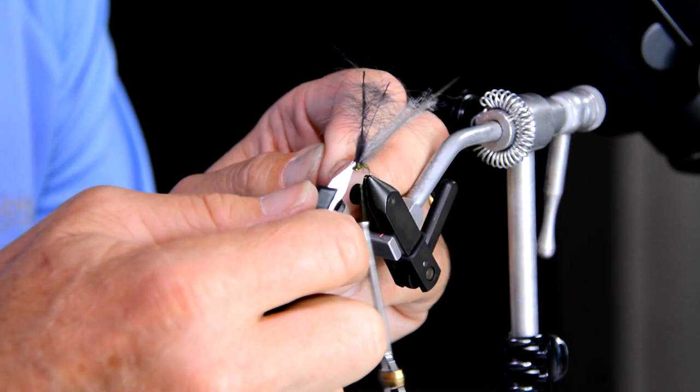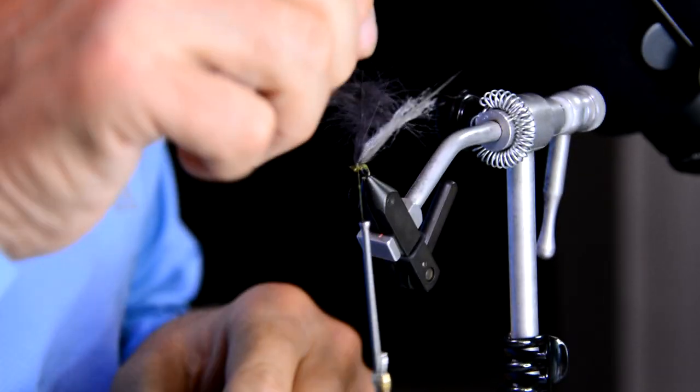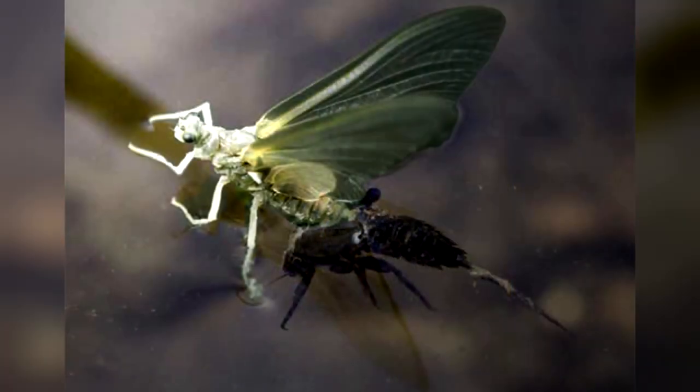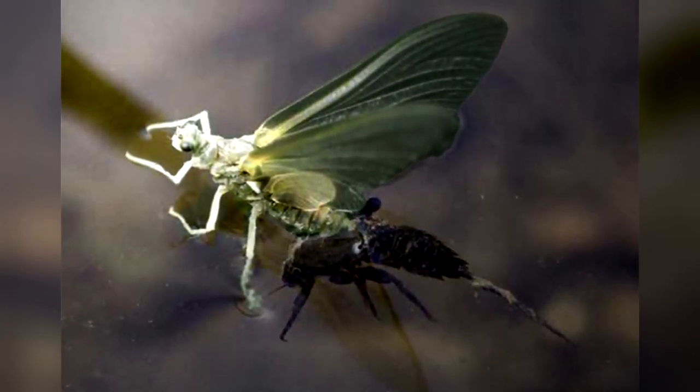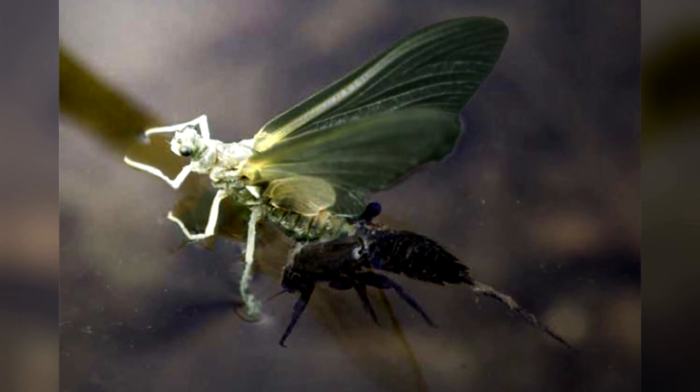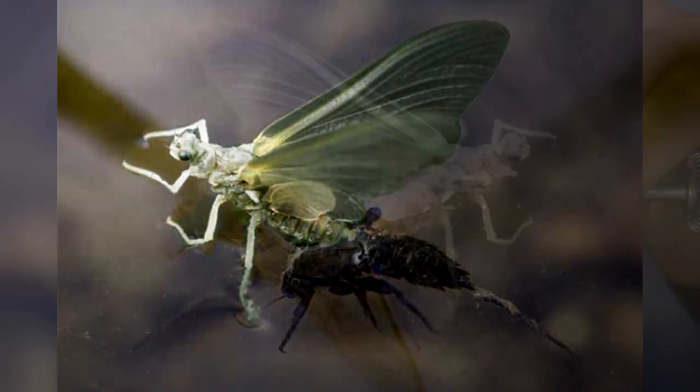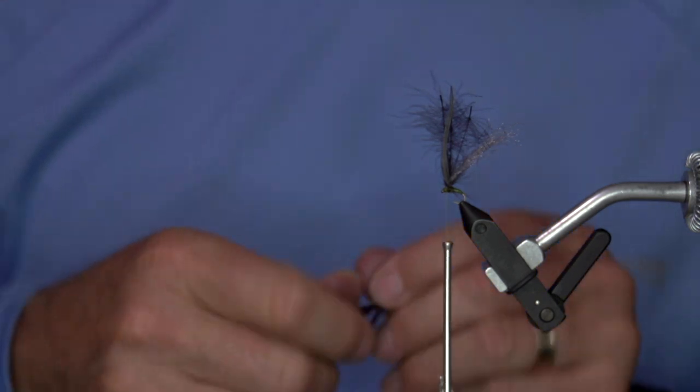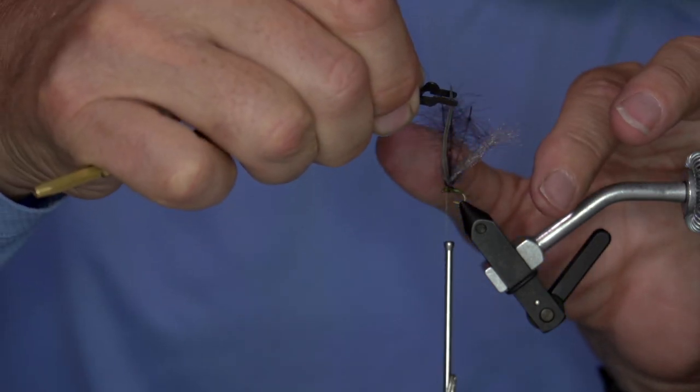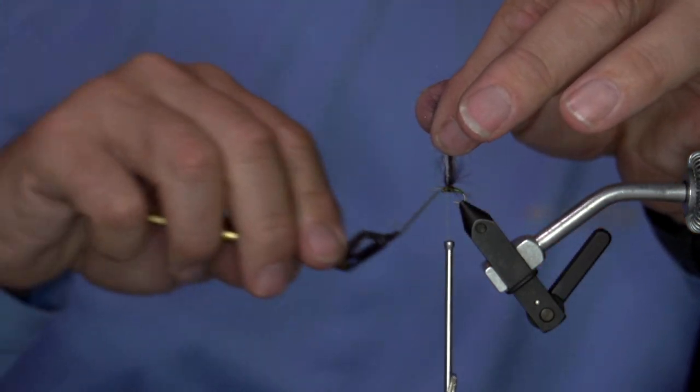Whatever dubbing you're not using on that body, just trim it. And wrap back to the base of that post. So remember, you don't want to crowd the eye on this bug. But when you look at pictures, and I'll try to put one up for you, of these baetis emerging, they do crawl out the front of this husk a lot. So they look like they're very weight forward as they're coming up. So I'm just going to use my nail and push that back a little bit.